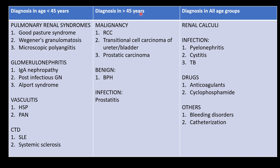In a patient older than 45 presenting with hematuria, we should consider renal cell carcinoma, transitional cell carcinoma of the ureter and bladder, and prostatic carcinoma. We should also consider BPH, infection, and prostatitis. In all age groups, always consider renal calculi, infection like pyelonephritis, renal tuberculosis, and drugs like anticoagulants or cyclophosphamide, which can cause hemorrhagic cystitis.